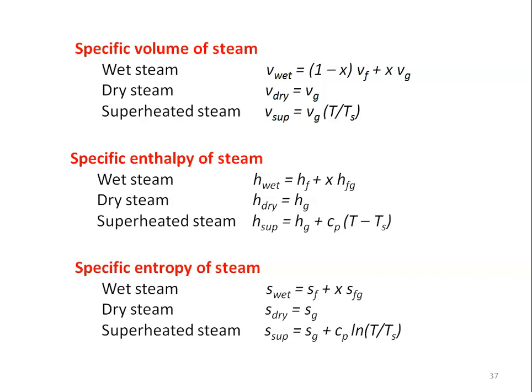For specific enthalpy of steam: H_wet = Hf + x·Hfg; for dry steam H_dry = Hg; and for superheated steam H_super = Hg + Cp·(T - Ts), where Hf, Hfg, Hg, and Ts values are taken from the steam table. The Cp value will be given in the problem; if it is not given, you can assume 2.2.